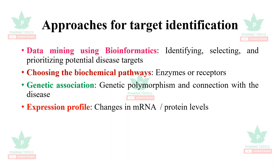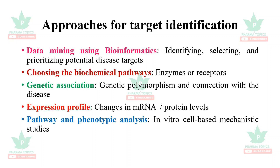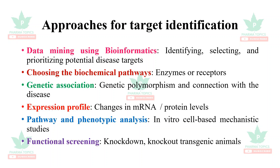Expression profiles — the changes in mRNA and protein levels — could be a tool to identify the targets. Pathway and phenotypic analysis using in vitro cell-based mechanistic studies may also be useful. Functional screening with knockdown or knockout transgenic animals can be used for identification of targets.